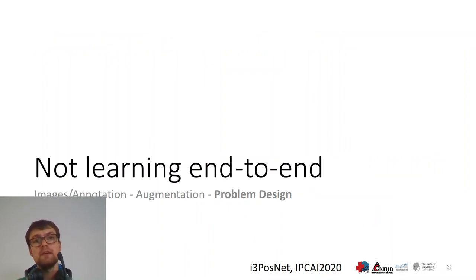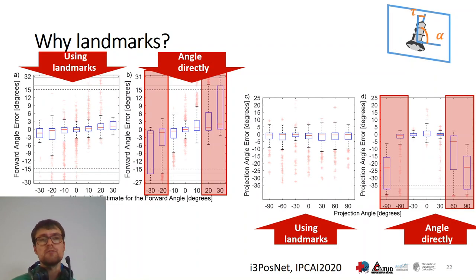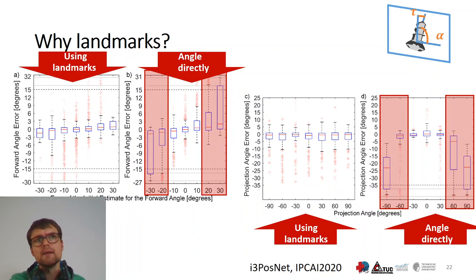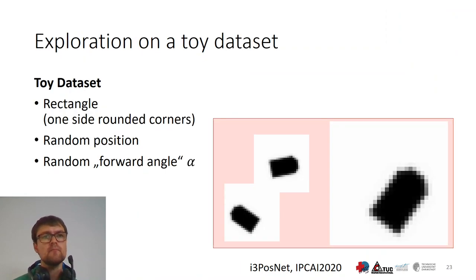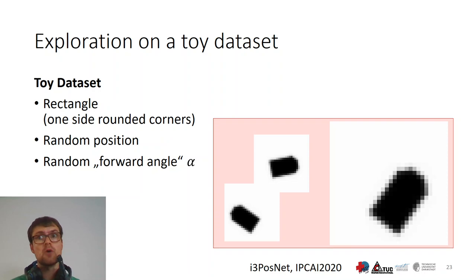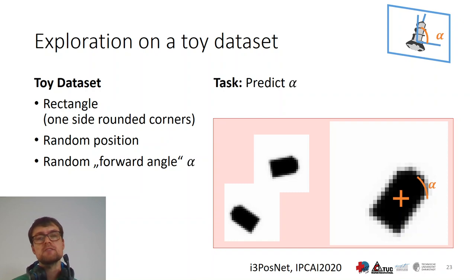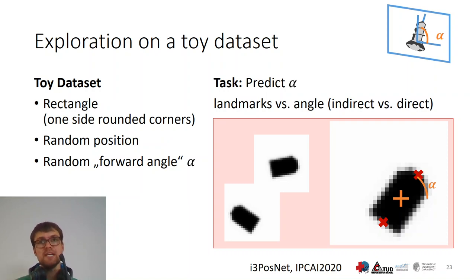Now I want to look at the approach of learning end-to-end, which we already discussed briefly in the short presentation, but I want to go further and really look at why using landmarks might be more efficient than using angles directly. We explored this scenario in a simple toy dataset. Here, a rectangle is our instrument on a small image — very simplified, one side with sharp corners, one side with rounded corners. It's randomly placed with a random orientation on the image, and our task is to predict the angle that it is oriented at, which we call the forward angle. We compare the prediction indirectly through landmarks with the direct prediction of the angle.